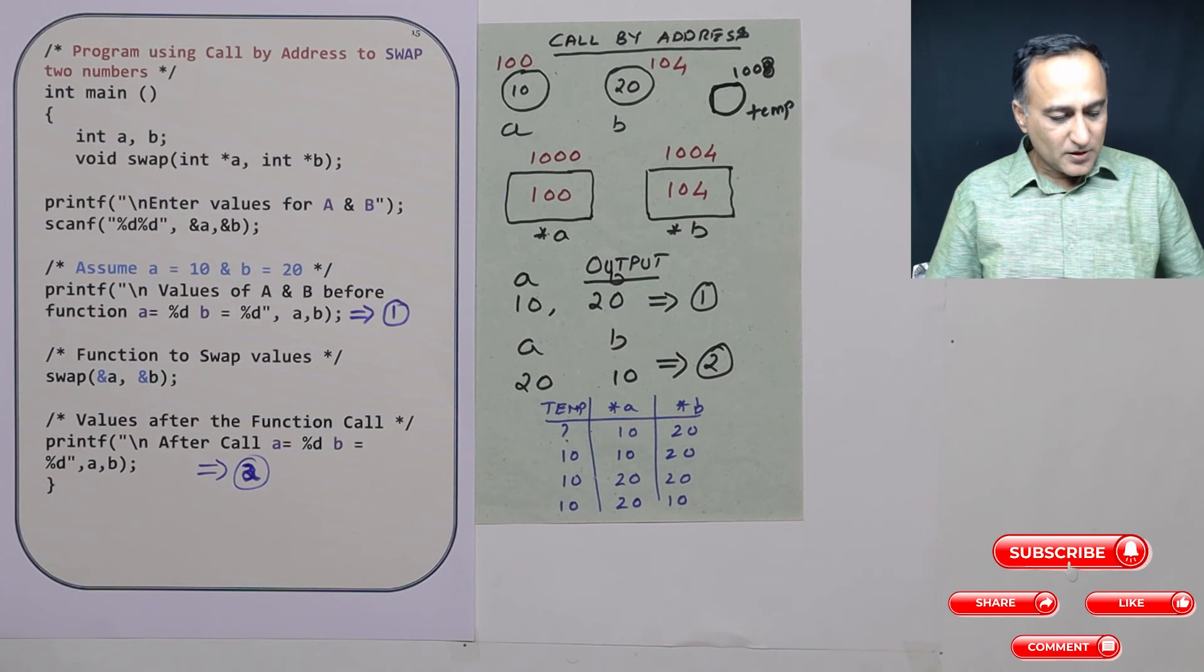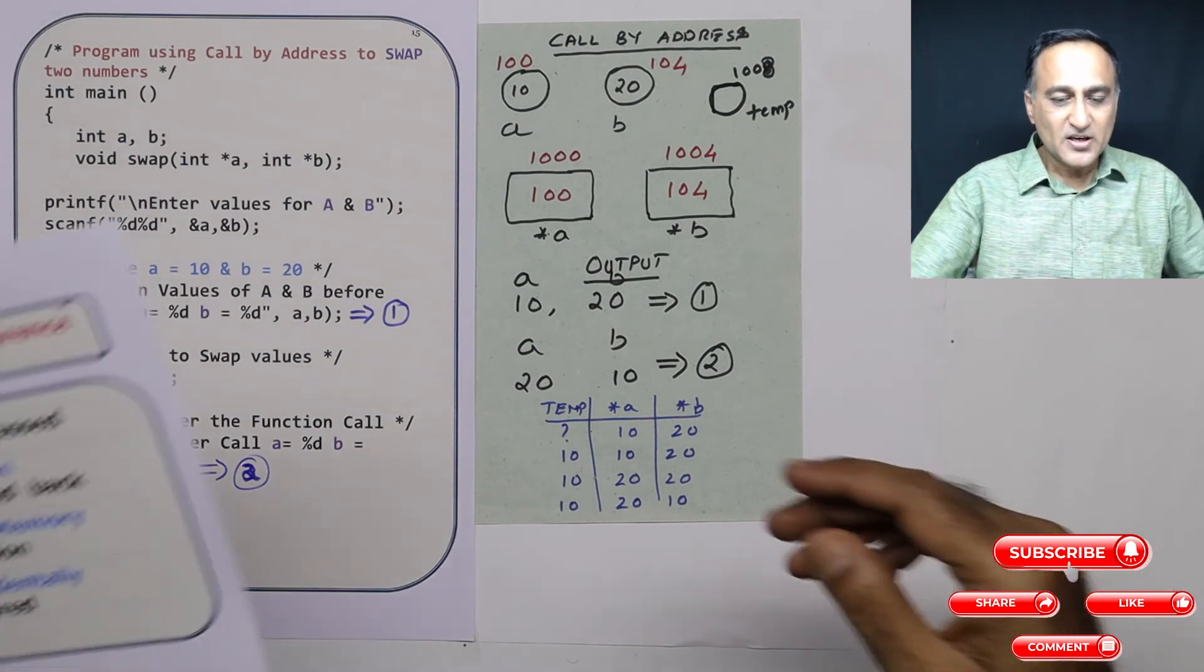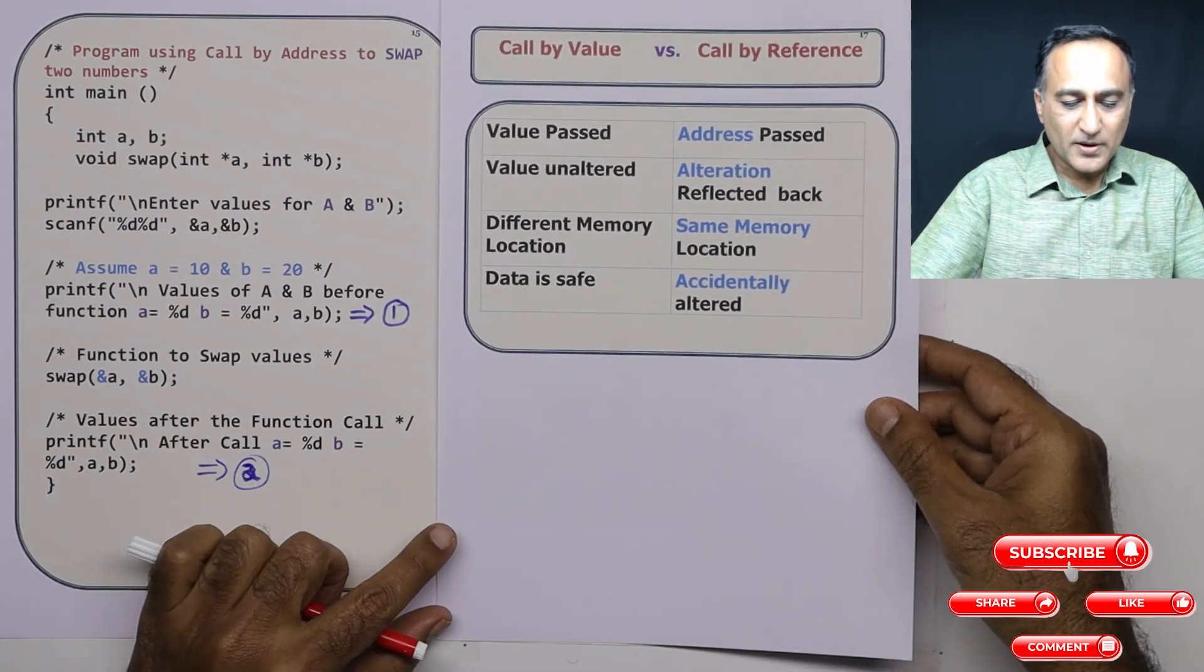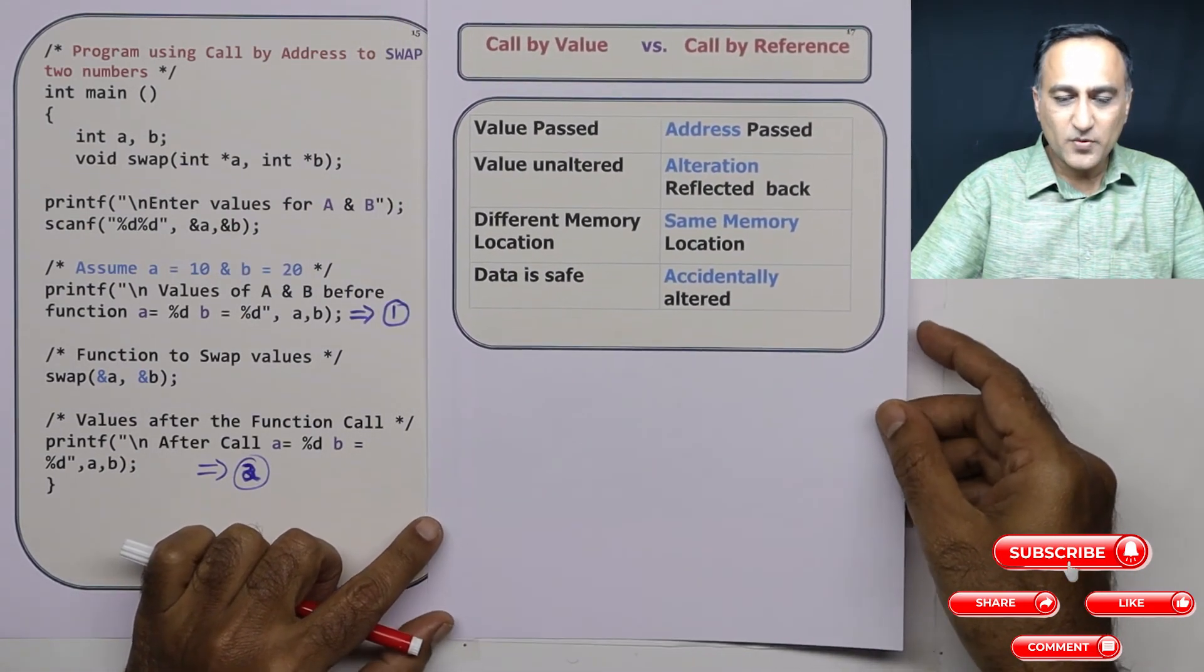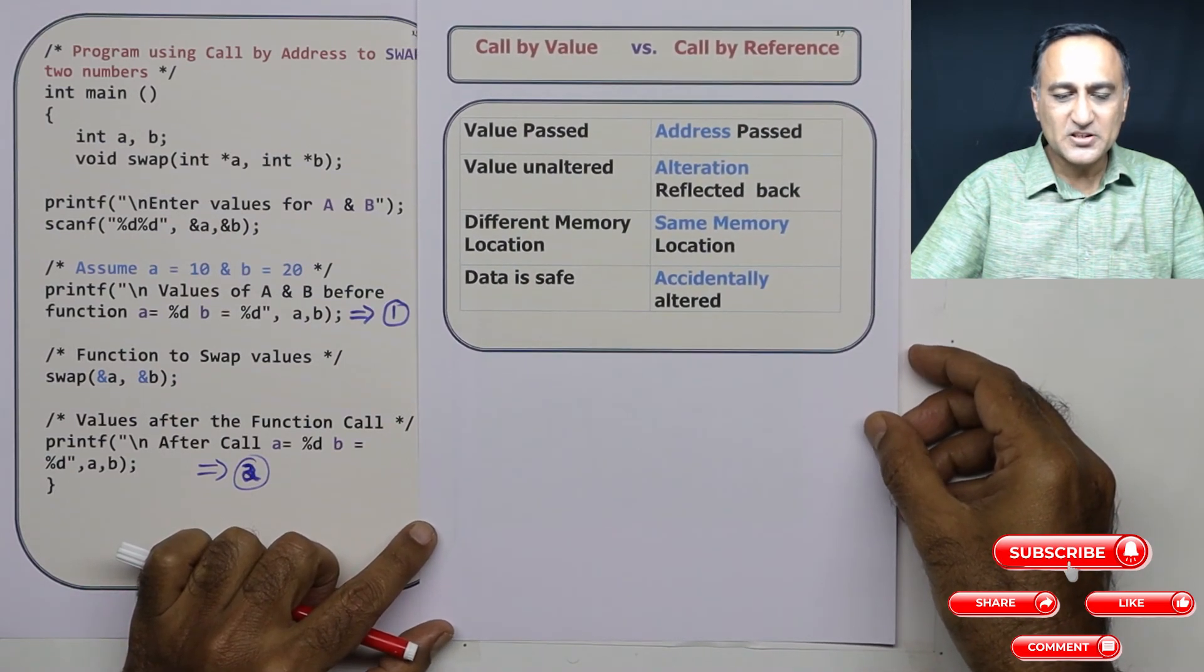So most of the time you will be using a mix of call by value and call by address. So let's try to differentiate what do you understand by call by value and call by address, a very frequently asked question in vivas as well as in campus interviews.